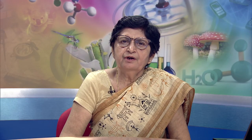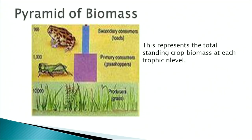The pyramid of number represents the number of organisms at each trophic level. In a grassland, the number of grasses is more than the number of herbivores, and herbivores more than carnivores. In some instances the pyramid may be inverted — for example, many caterpillars and insects can feed on a single tree. The pyramid of biomass shows decreasing standing crop biomass from grasses to grasshoppers to frogs at each successive level.